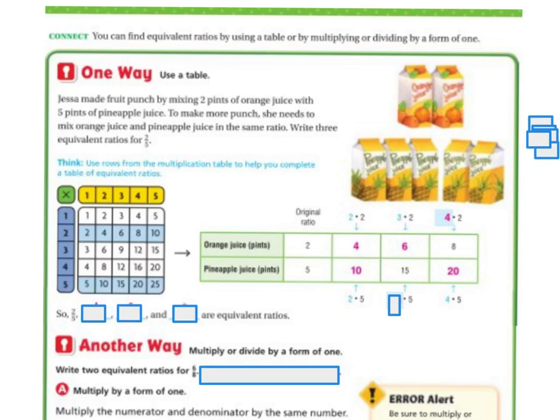So, 2 fifths is equivalent to 4 tenths. It's equivalent to 6 fifteenths. And it's equivalent to 8 twentieths. So, it's these right here. There's my 4 tenths. There's my 6 fifteenths. There's my 8 twentieths. And it's also equivalent to 10 twenty-fifths.